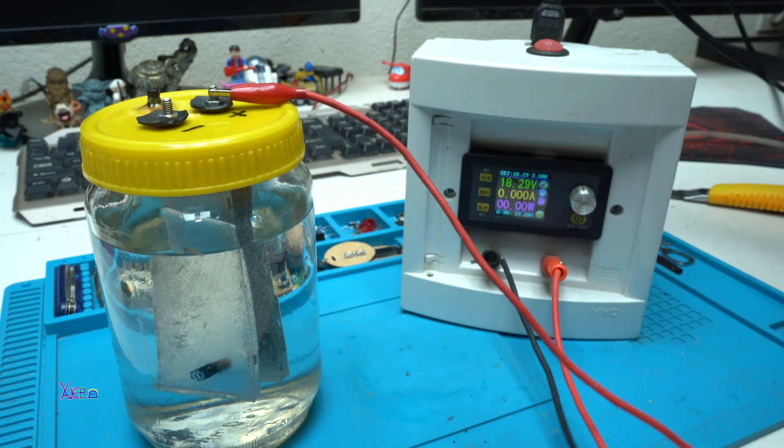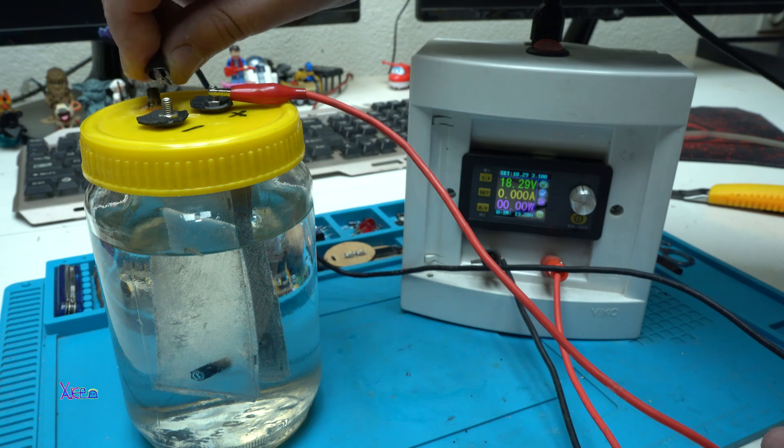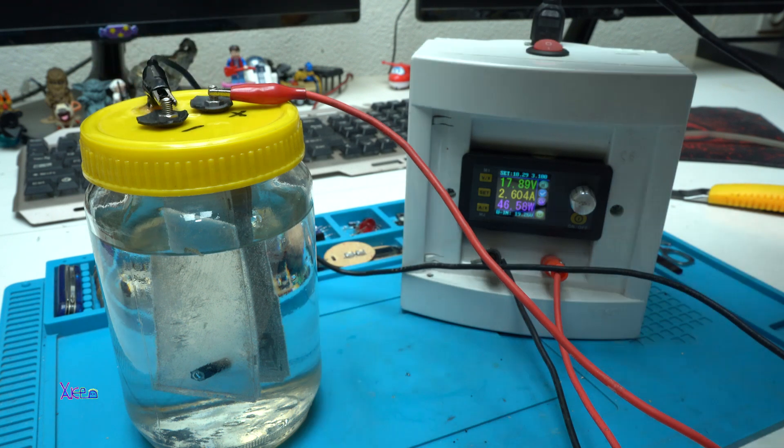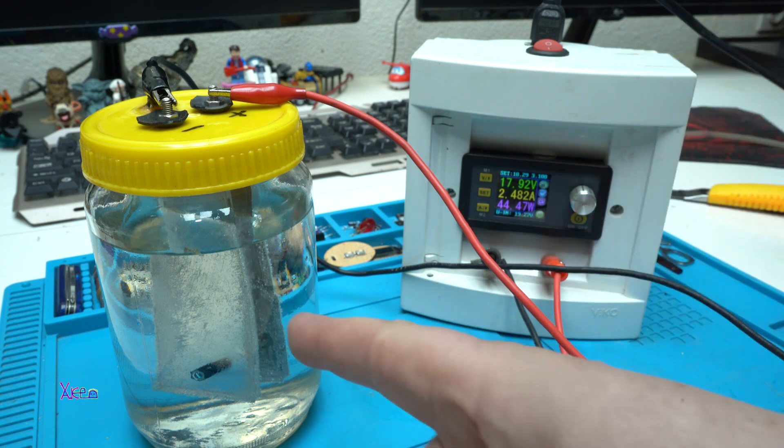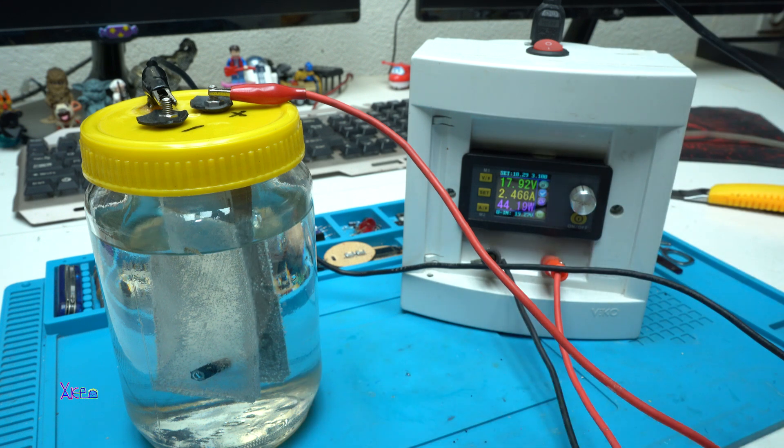Positive to positive. This is negative. It's pulling 2.4 amps. And the generator start working and generating hydrogen and oxygen.